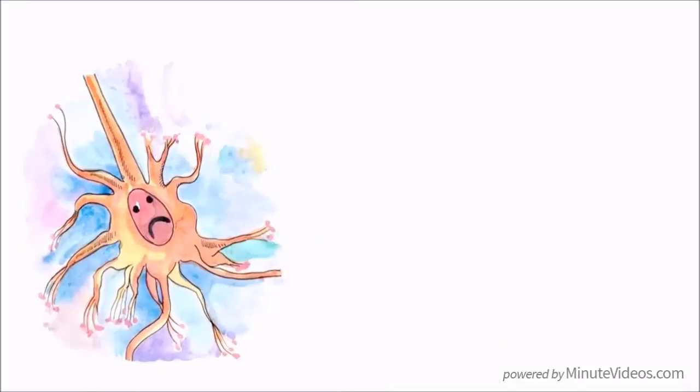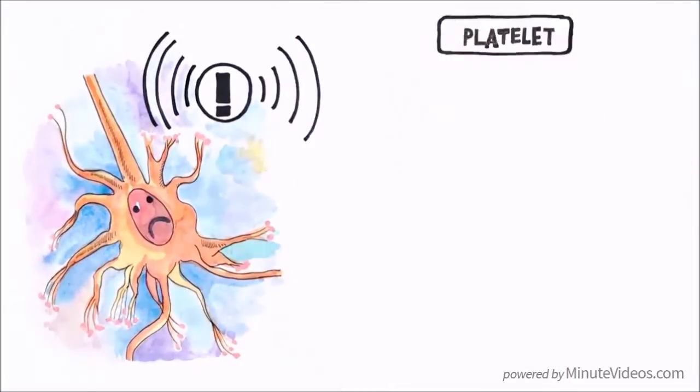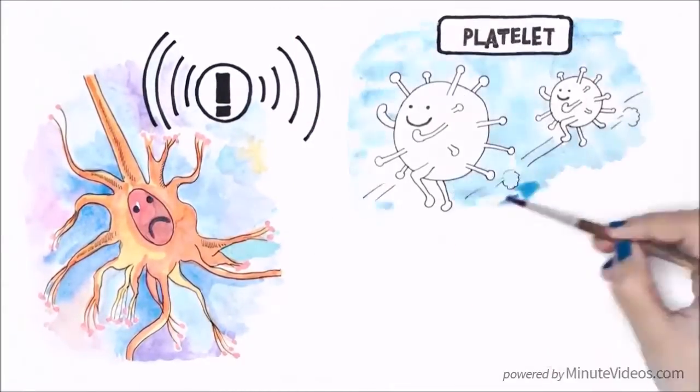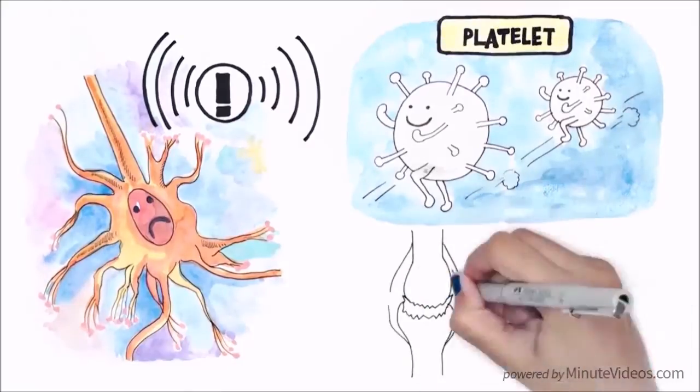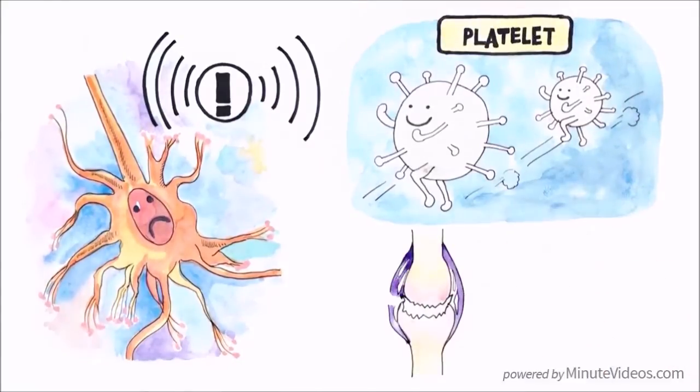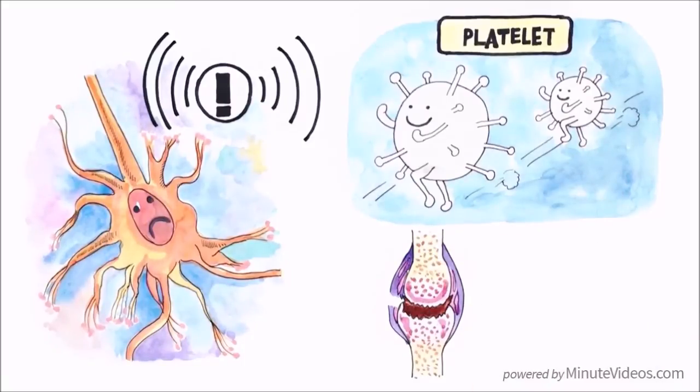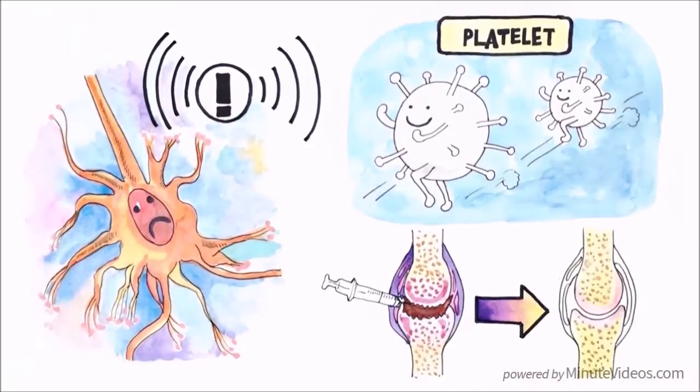Injured cells send off distress signals attracting the activated platelets brought in through PRP. The newly arrived growth factors now motivate the healthy cells to multiply and replace the injured or dead cells. The healing process is in full gear.